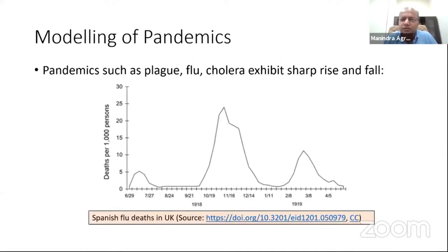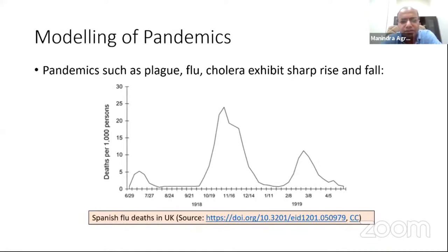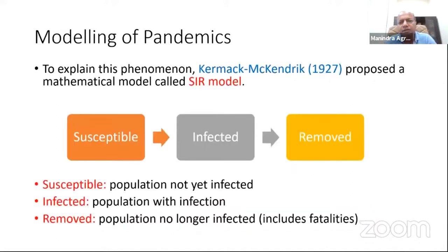Let me start with where this whole modeling story began — namely the Spanish flu of 1919. A very peculiar phenomenon. Data was probably for the first time being collected properly, and this phenomenon was observed — a plot of deaths in UK showing three peaks, with the middle one being the largest, very high and very narrow. The question that arose was exactly what phenomenon was causing this. This led Kermack and McKendrick in 1927 to propose the first mathematical model to track pandemic progression.